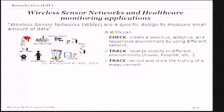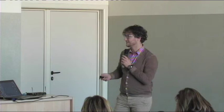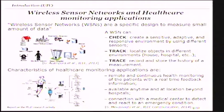Regarding this activity, we want to implement a wireless sensor network of dosimeters. A wireless sensor network is a technology customized in different environments by using different sensors that are able to create an adaptive and sensitive environment. These sensors can measure different parameters in the environment and also record and track the history of measurements. In particular, we are focused on the current monitoring application where the wireless sensor network is designed around the human body.